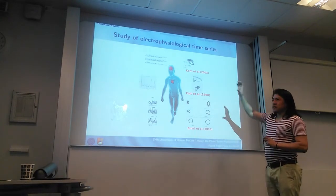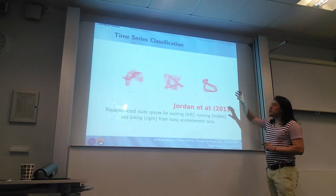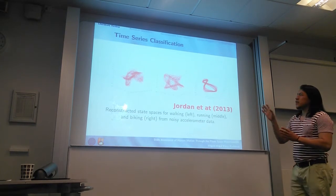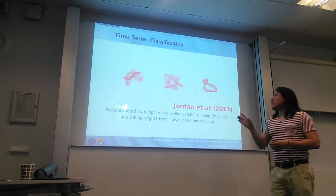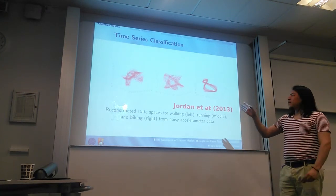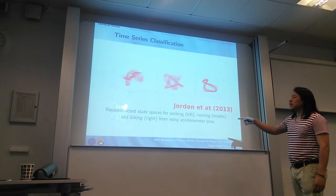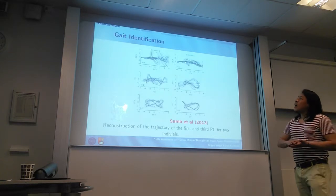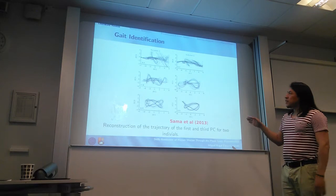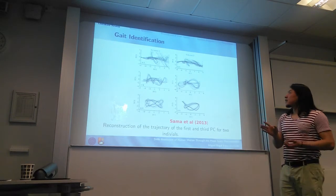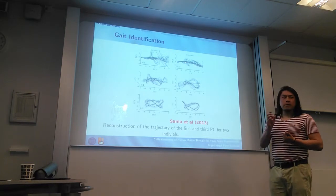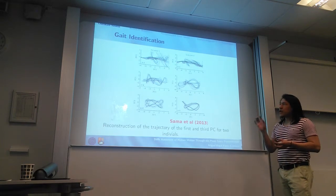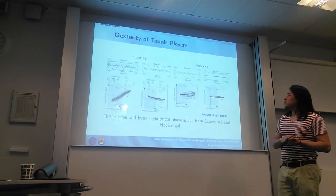In this research we can see different pathologies of users. This is another important research in which Jordan and others presented the concept of reconstructed state space in order to classify different activities such as walking, running, and biking, which come from using accelerometer data. Another similar research is from Sama and others, in which they use identification as a biometric metric for different volunteers, by using the same approach of the state space representation.